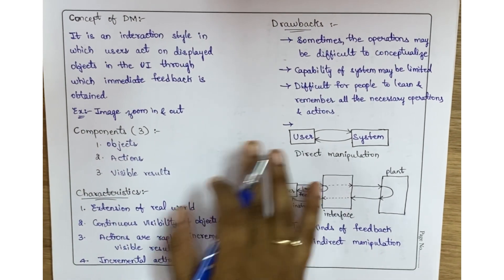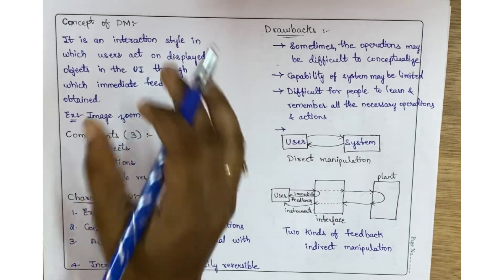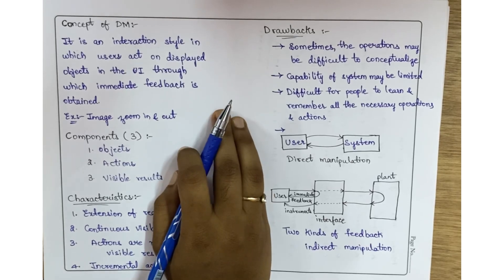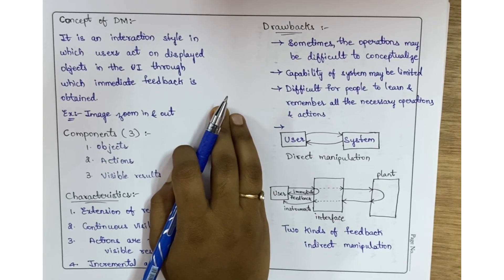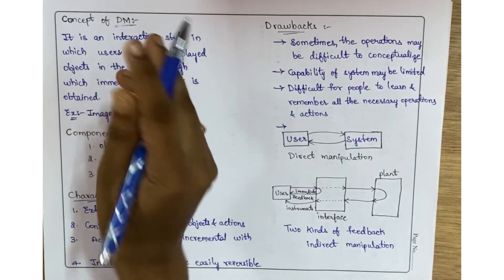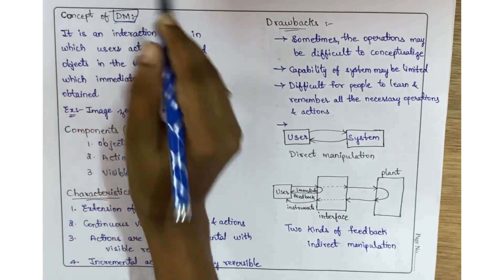We are communicating, but there are different styles of communication, different styles of interaction. Like how a user can communicate with the system - we have question and answer type, pick and click, and direct manipulation is one of the interaction styles.